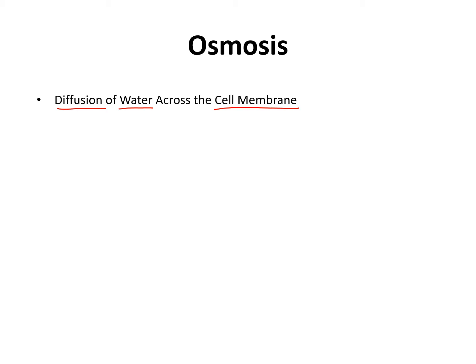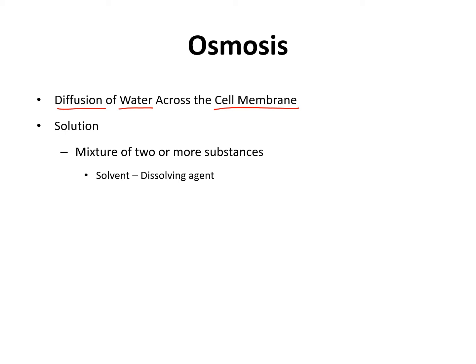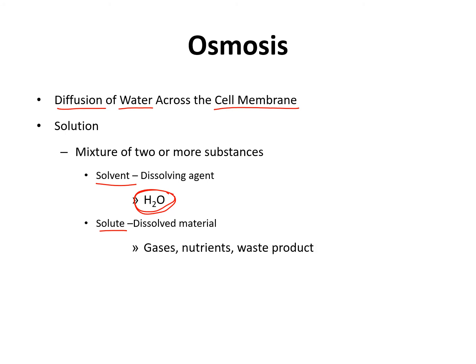With osmosis, we are concerned mainly about solutions. A solution is a mixture of two or more substances. The first substance is called a solvent, which is the dissolving agent — in biology, the solvent is always water. The second component is the solute, which are the dissolved materials found in the water. That can be many different things: gases, nutrients, waste products, or sugar. A solution is always expressed as a percentage.